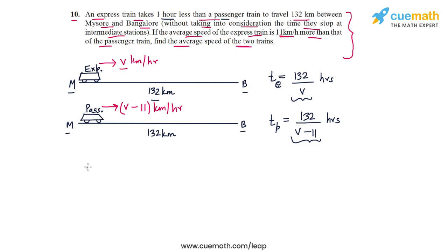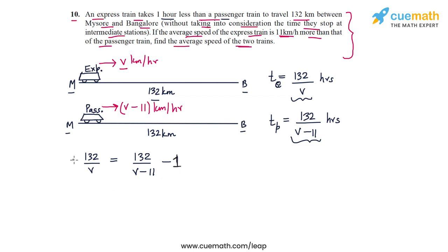We write: 132/v equals 132/(v minus 11) minus 1, because the express train takes one hour less than the passenger train. This is how we set up the equation in v, and now all we need to do is solve it to find the value of v.